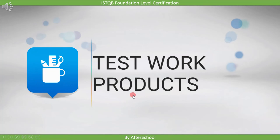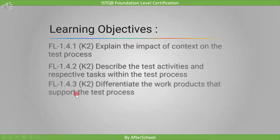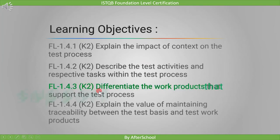In the previous lecture, we saw different activities of the test process, and in this lecture, we will see what is the output of those activities. The output of the test activity is called a test work product. This is our third topic of this session, where we have to differentiate the work products that support the test process. It is marked as K2, so we have to understand this topic.